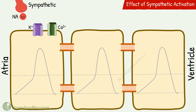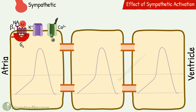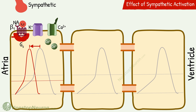Sympathetic neurons release noradrenaline. It binds with β1 receptors on the cell membrane of the AV node, which is a Gs protein-coupled receptor. Its stimulation produces effects that are opposite to that of parasympathetic stimulation. It causes opening of calcium channels, so calcium current increases. This steepens the phase 4 depolarization and also makes the threshold more negative. Because of these changes, the threshold is reached earlier and action potential appears in lesser time.